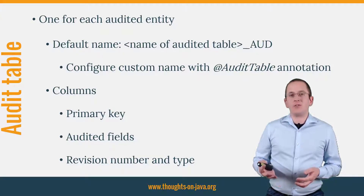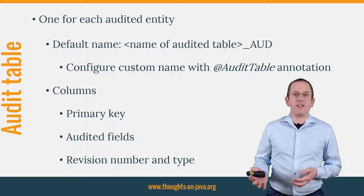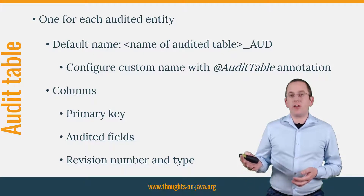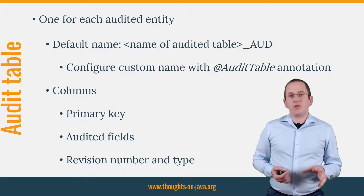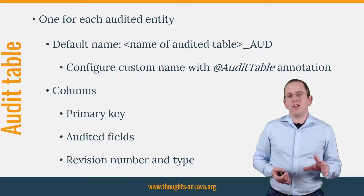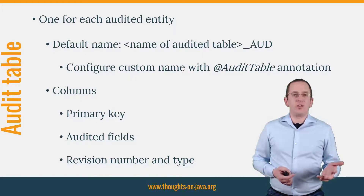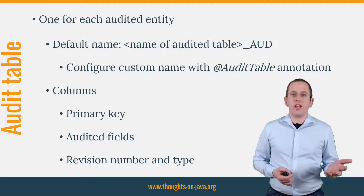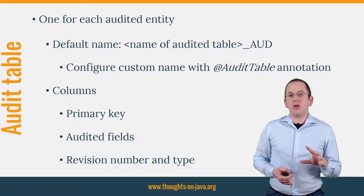Each audit table contains the primary key of the original entity, all audited fields, the revision number, and the revision type. The revision number has to match a record in the revision table and is used together with the ID column to create a combined primary key. The revision type persists the type of operation that was performed on the entity in the given revision. Envers uses the integer values 0, 1, and 2 to store that the entity was added, updated, or deleted.